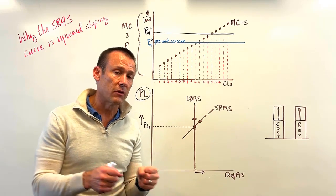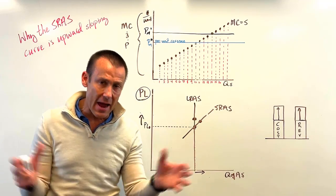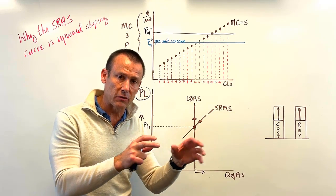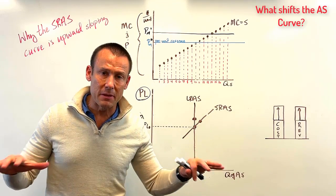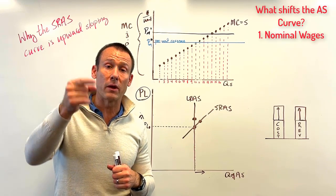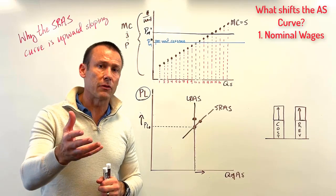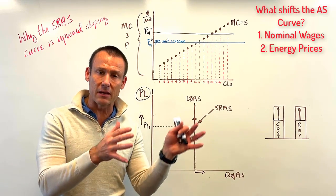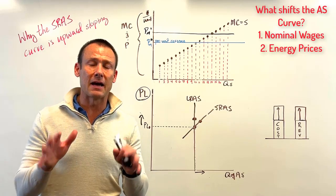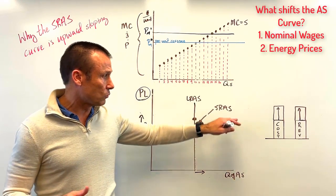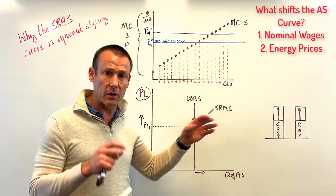What costs of production shift the aggregate supply curve? We're talking about the macro economy — total supply of domestically produced final goods and services. Costs that pretty much every business incurs. Number one: nominal wages. How many businesses have to pay wages? Pretty much all of them. Another one: energy prices, or commodity prices — the big commodity being oil and gas. Everybody has an energy bill, and producing and bringing goods to market takes a lot of energy.